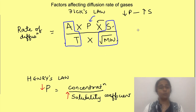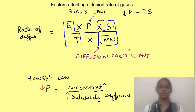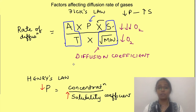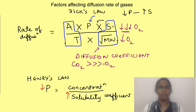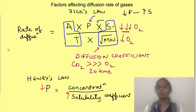In Fick's law, the two properties of a gas — molecular weight and solubility — together form the diffusion coefficient of the gas. The molecular weight of oxygen is less, but its blood solubility is much less than that of carbon dioxide. Because of this, carbon dioxide diffuses much faster than oxygen when all other factors are kept the same. In fact, carbon dioxide diffuses 20 times faster than oxygen.